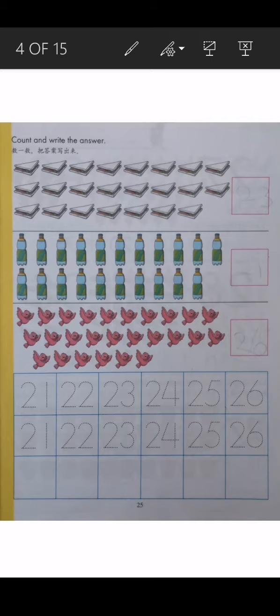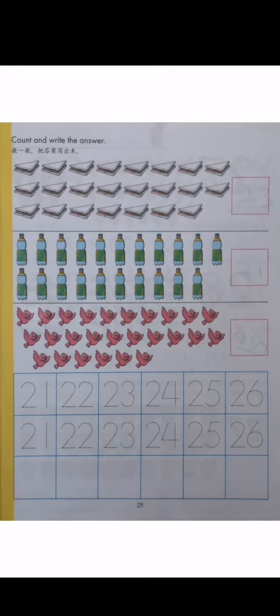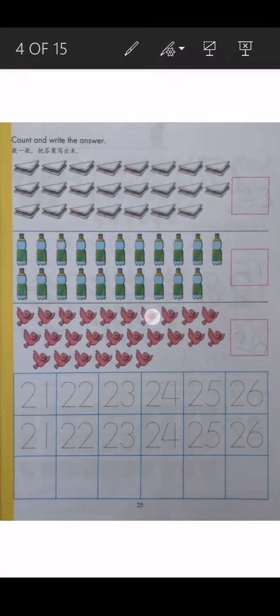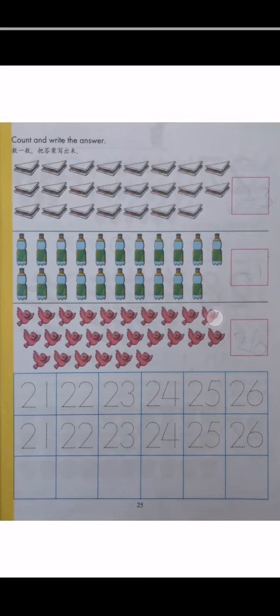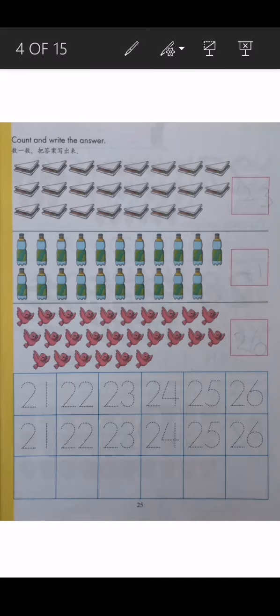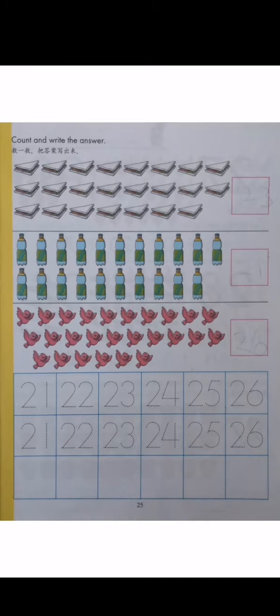Let's look at the next one. 1, 2, 3, 4, 5, 6, 7, 8, 9, 10, 11, 12, 13, 14, 15, 16, 17, 18, 19, 20, 21, 22, 23, 24, 25, 26. Children, please write 26 here. Remember to write 21, 22 and continue. If you didn't follow along, you can look at the answer here.